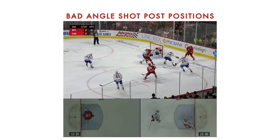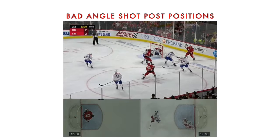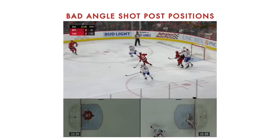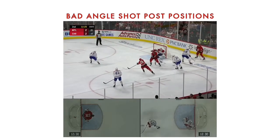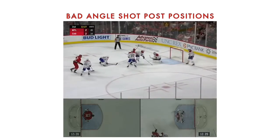Here we go — you can see they bump it down low. Carey Price automatically goes into the reverse VH. His pad is completely loaded up, he's got so much power loaded into that leg, and he's staying perfectly tall in case this guy decides to wrap it around. In this case he passes out, and Carey Price uses that post to leverage and push out, gets his depth back, and makes a very important save.